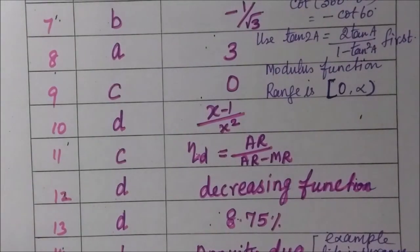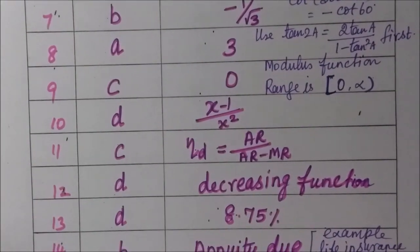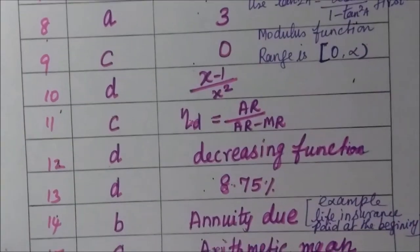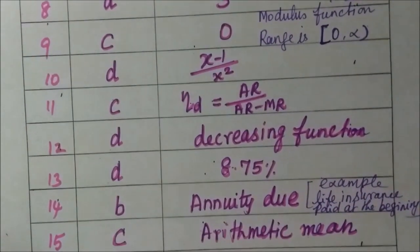Question 11: option c, nu_d equal to AR by AR minus MR. Question 12: option d, decreasing function. Question 13: option d, 8.75%.